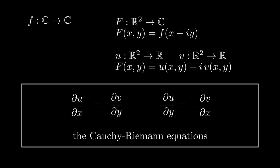Now what are these equations saying? The first equation says that if I change the real input and ask how the real output changes — that's ∂u/∂x — that equals what happens if I wiggle the imaginary input and ask how the imaginary output changes, which is ∂v/∂y. The second equation is ever so slightly more subtle: it says the change in the real output when I wiggle the imaginary input is negative the change in the imaginary output when I wiggle the real input. So we've shown that if a function f is holomorphic, then the Cauchy-Riemann equations are satisfied.